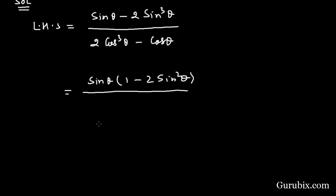We shall take cos θ common in the denominator. Then we have cos θ with (2cos²θ - 1) in the bracket.